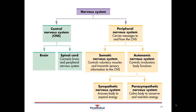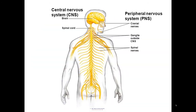Looking now at the peripheral nervous system, this comprises all the nerves that run from the spinal cord out to the body and back again. We have sensory nerves which pick up all the information from the body's surface and internally, and they transmit that information via electrical signals up to the spinal cord, which rapidly moves that information to the brain to be analyzed.